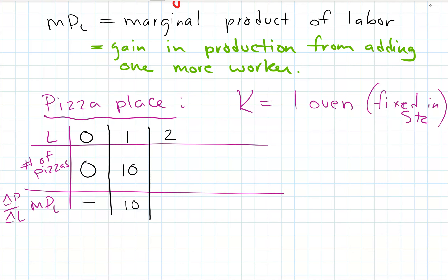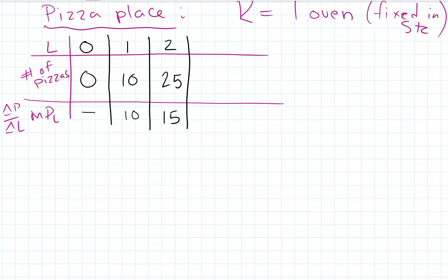We add a second worker and now total production goes up to 25. The marginal product is calculated by comparing to the one before: total production is 25, with one worker it was 10, so the second worker added 15 pizzas. That's what marginal product of labor means — how much did they add to production? The reason this happens is they can now do some specialization: one works the front handling customers, the other works in the back making pizza and managing the oven.